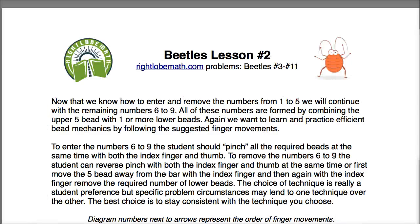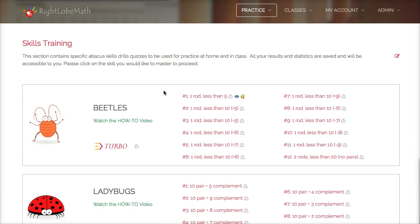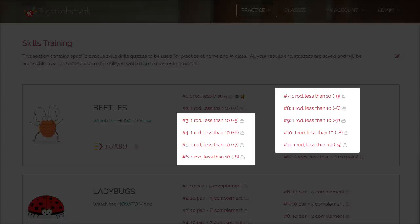Again, you can download the attached PDF file from the blog and this lesson number two will focus on the BEATL skill problem sets number three through eleven.